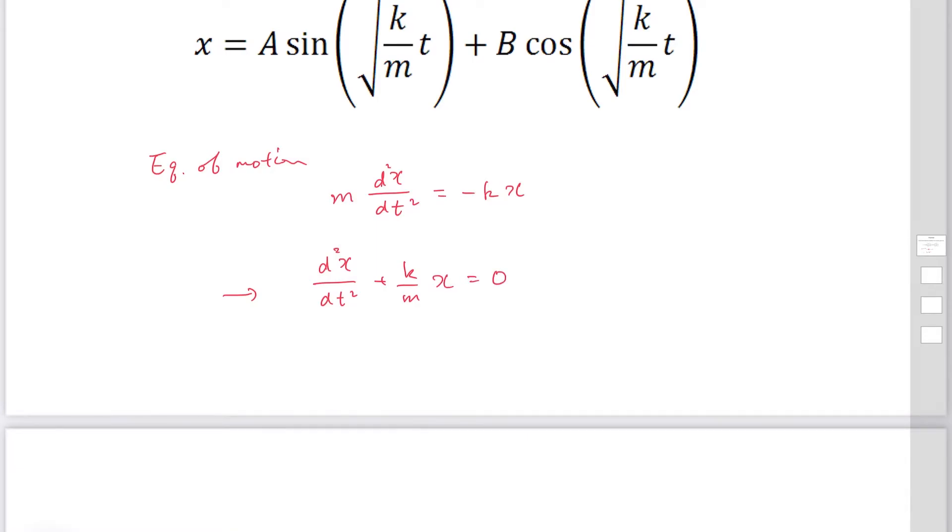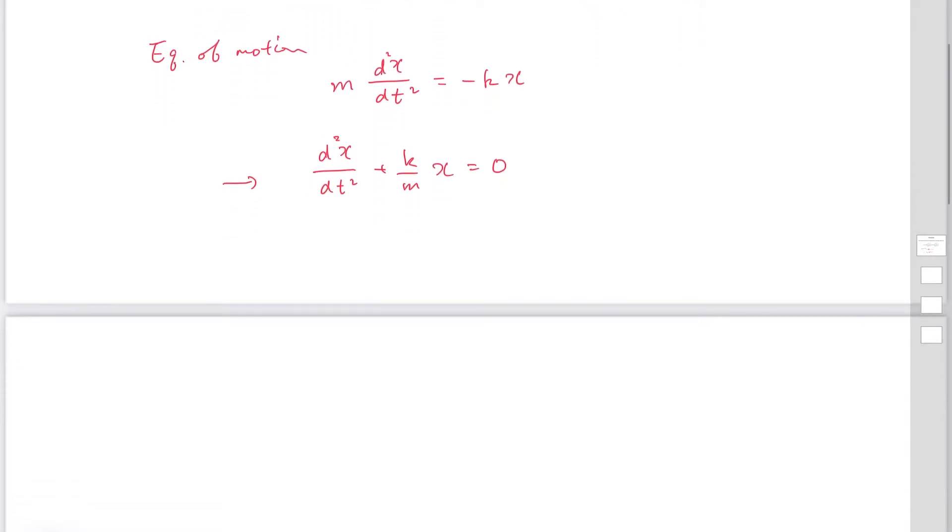This is a second order linear differential equation. We substitute x equal exponential st. Then this gives s squared plus k over m equals 0.